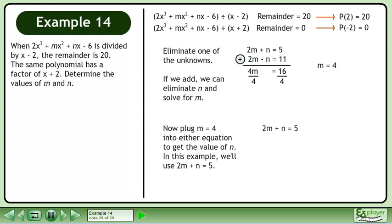Now plug m equals 4 into either equation to get the value of n. In this example, we'll use 2m plus n equals 5. Plug in 4 for m. This gives us 8 plus n equals 5. Subtract 8 from both sides to get n equals negative 3.